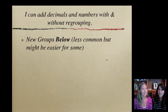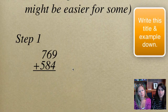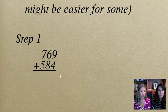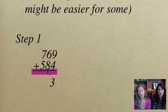And the next method is new groups below. Very similar to new groups above, but let's see what we do here. So once again, we're going to start by adding in our ones place. And we want to think 9 plus 4, again, is 13. So we have a 3 here. But instead of putting our new group up here, we're going to put it below.